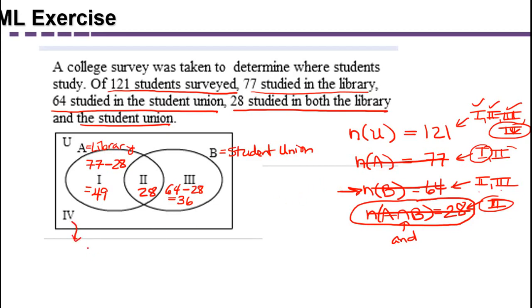To get region 4, we would take 121 minus the 49 in region 1, the 28 in region 2, and the 36 in region 3. This leaves 8 students left to be placed in region 4.